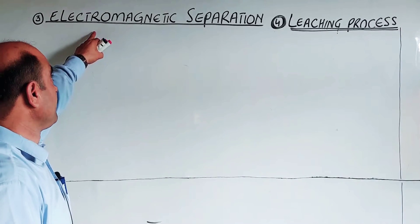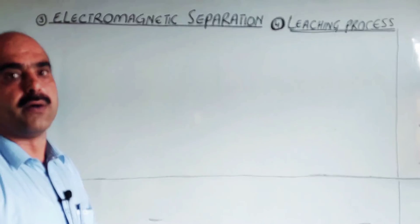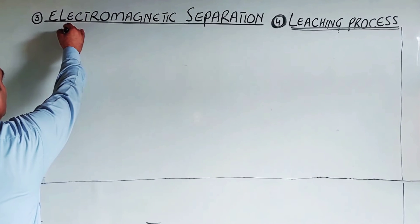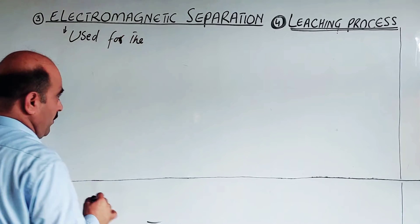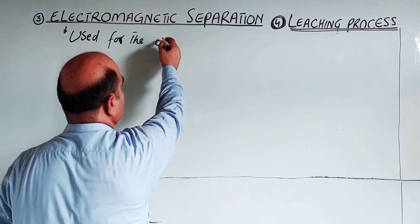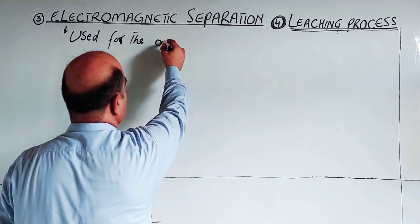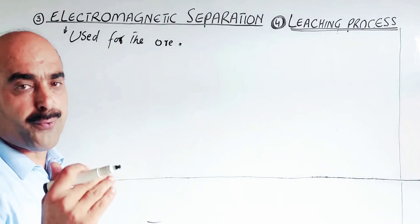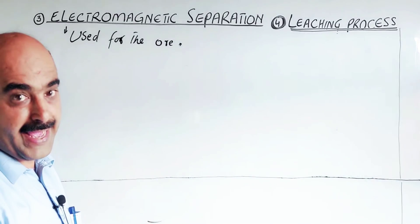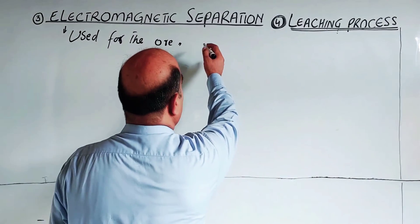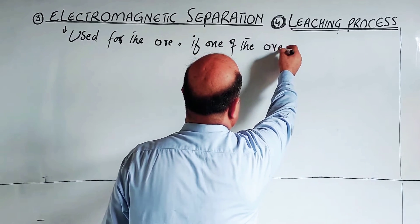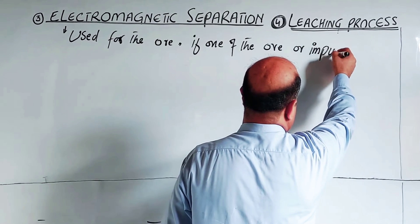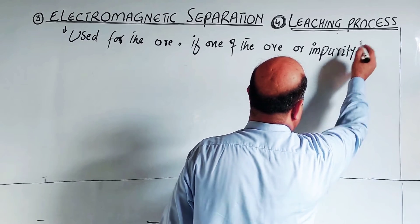Electromagnetic separation process: this process is used for the ore if one of the ore or impurity is magnetic in nature. Magnetic means attracted by magnet.